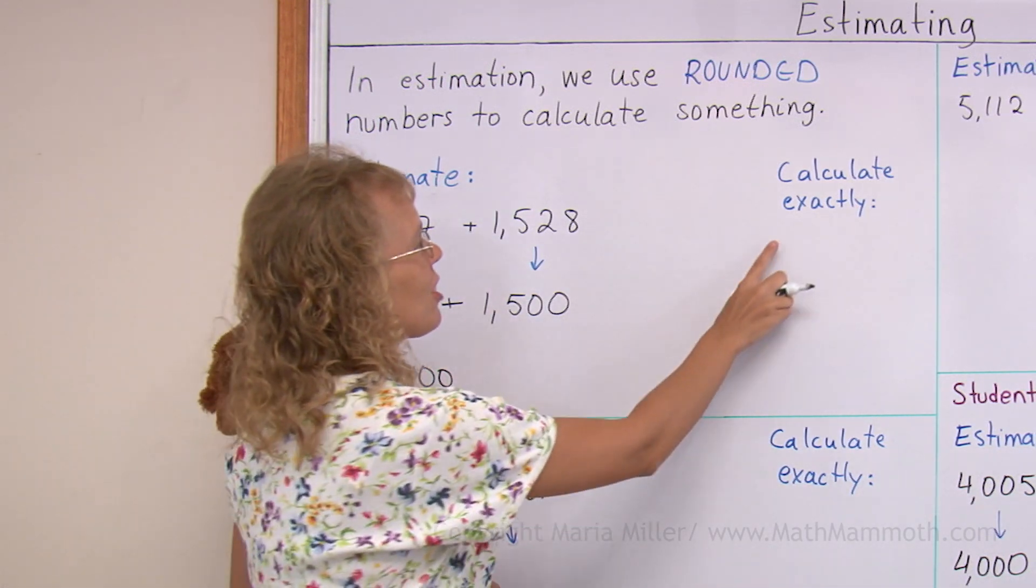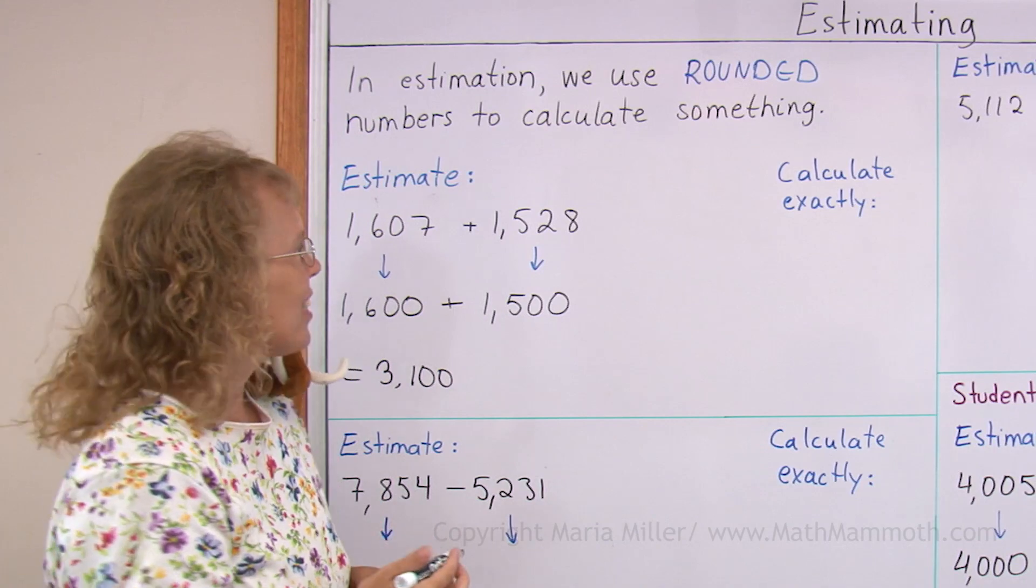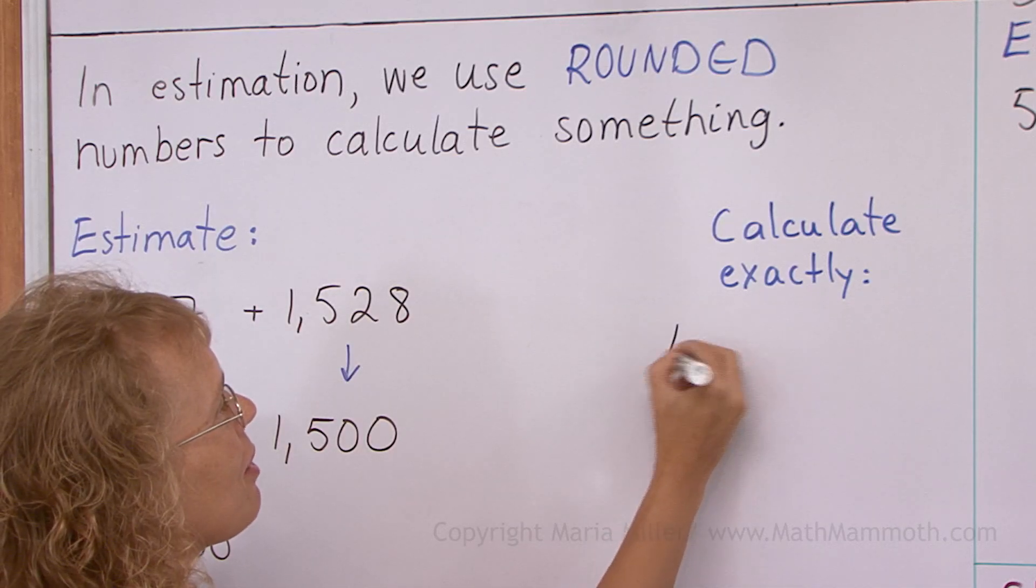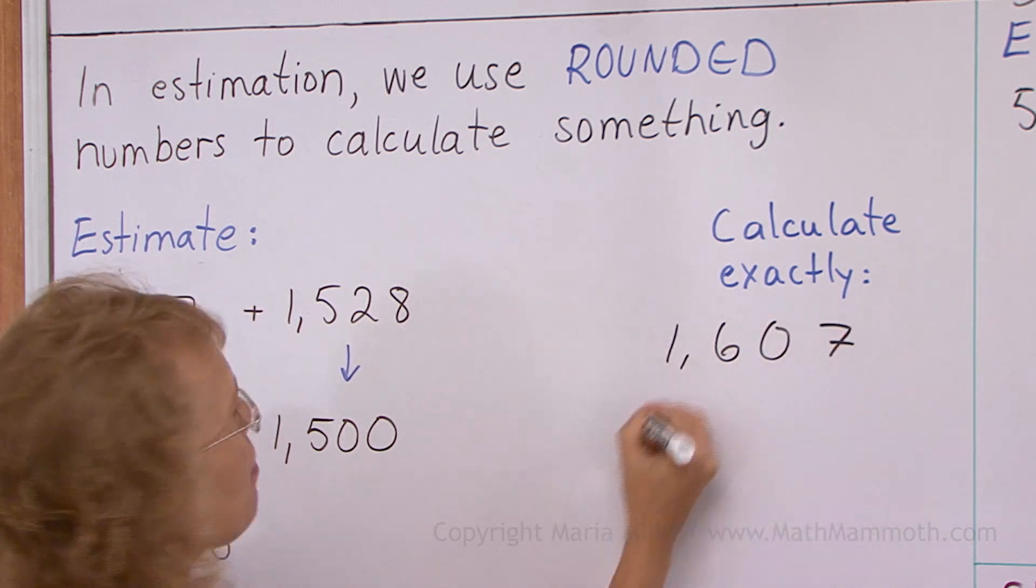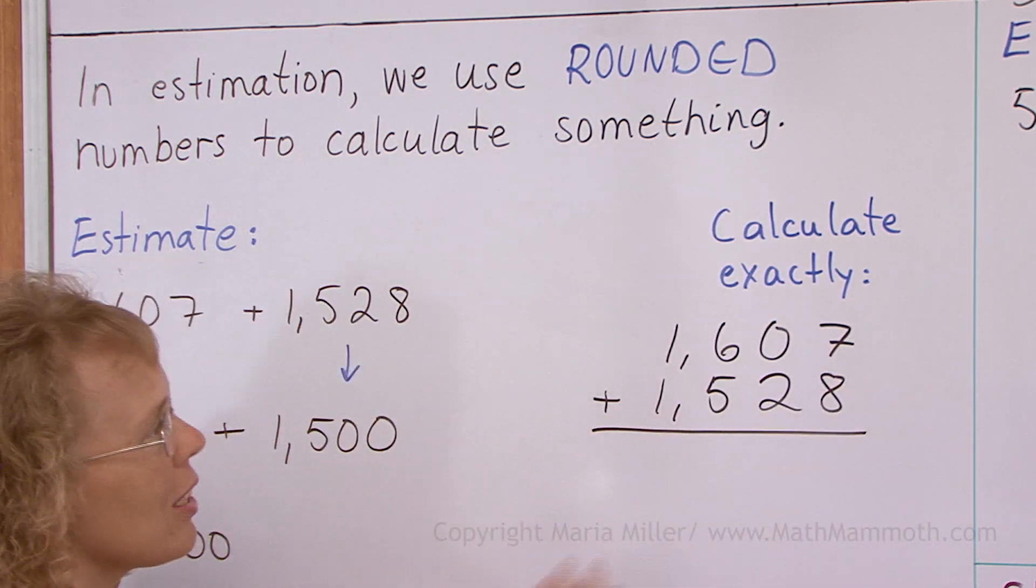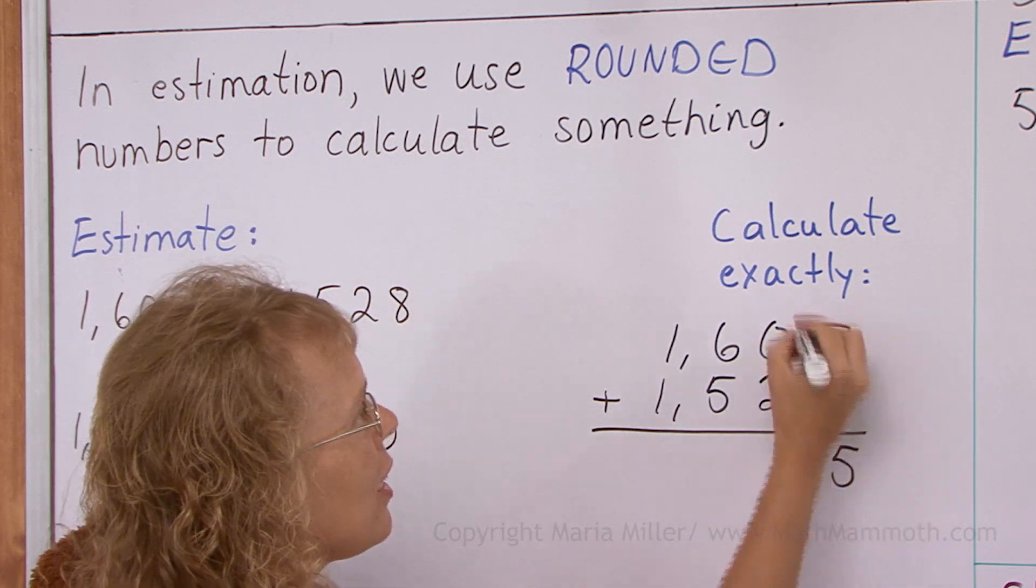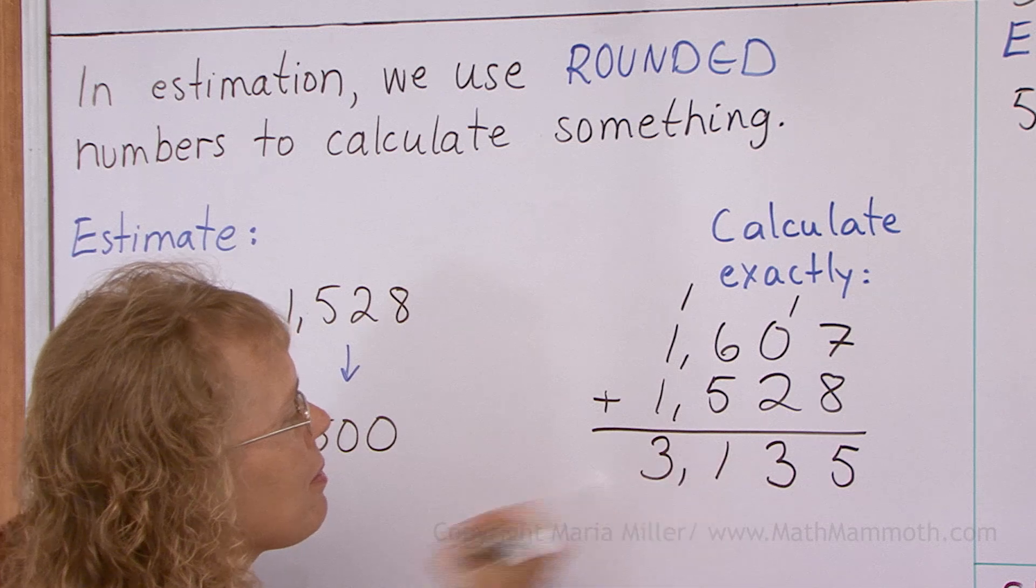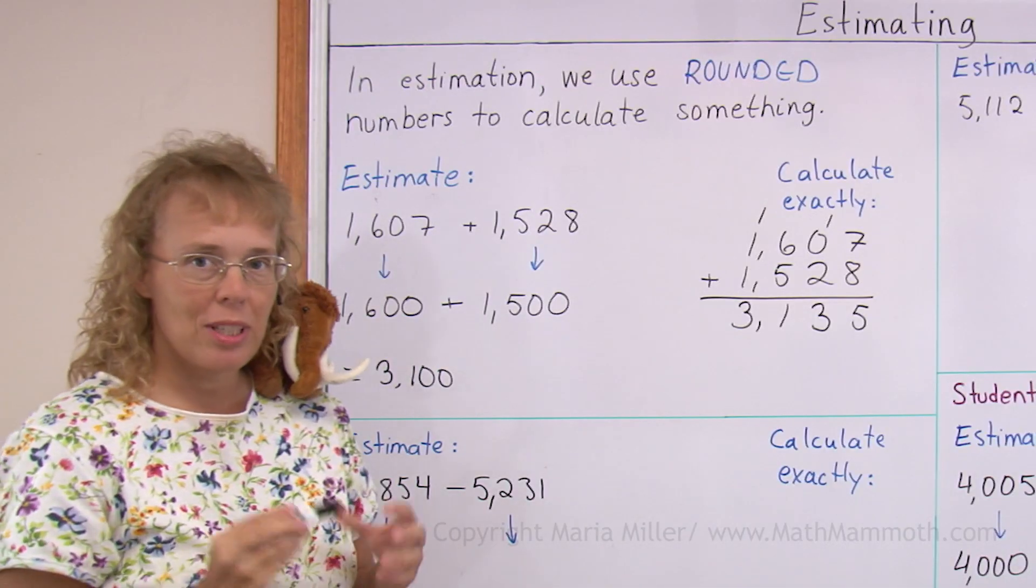And now let's also calculate exactly. That means that we take these exact numbers here without any rounding and we add. And just normally, 7 plus 8 is 15 and then 3, 11, 3, 3,135.